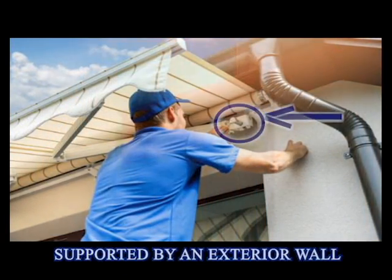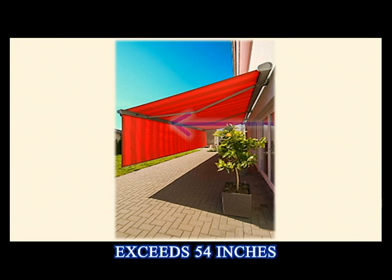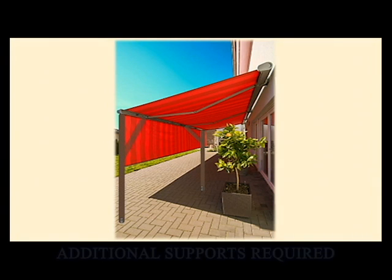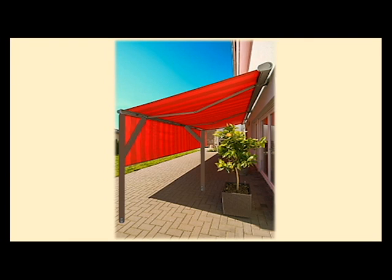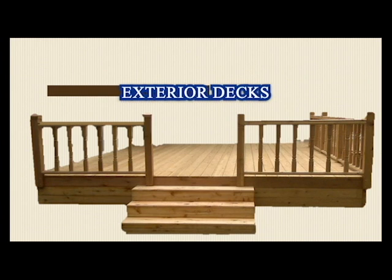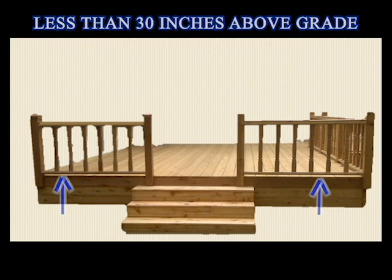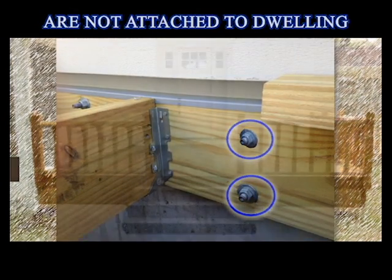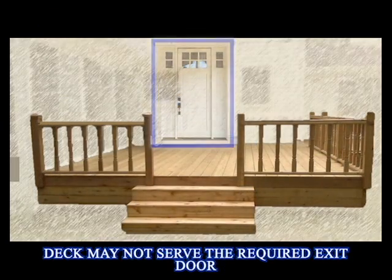The awning must be supported by an exterior wall. In this example, the awning exceeds 54 inches from the wall and requires additional support, so it is not exempt from a permit. Some exterior decks are also exempt from building permits. The deck must be less than 200 square feet, less than 30 inches above grade, detached from the structure, and may not serve the required exit door in order to be exempt.